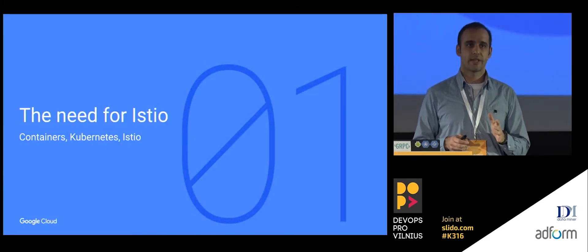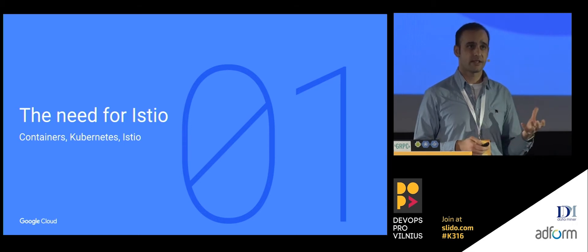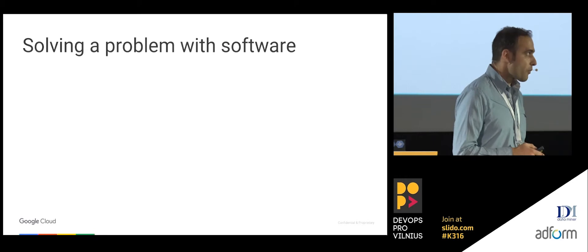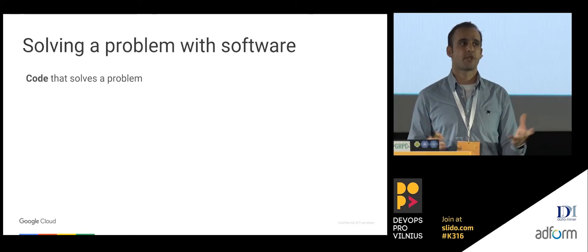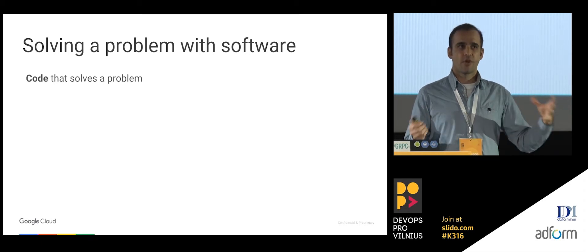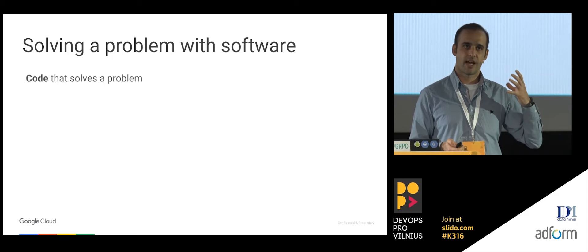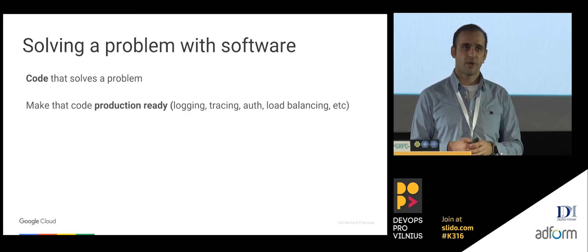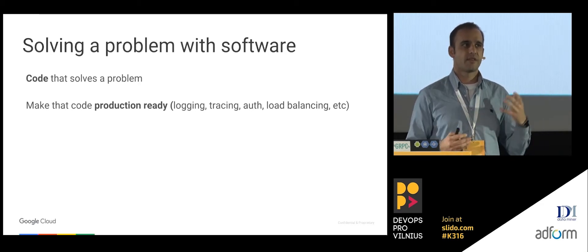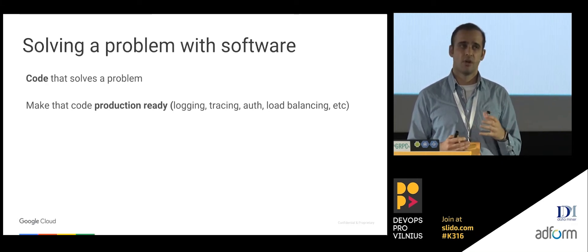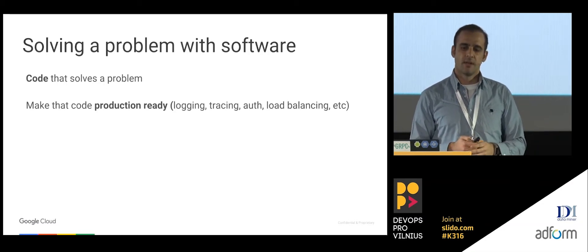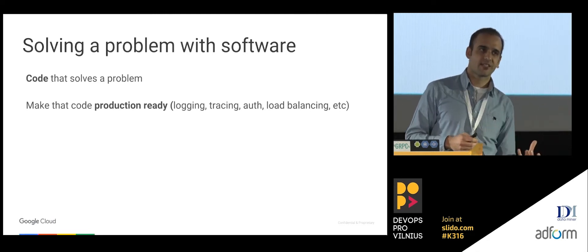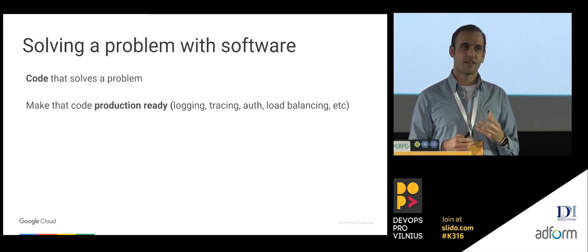So the need for Istio. When you think about solving a problem with software, the first thing you need is the actual code that solves the problem. But that's not the only thing. You need to make the code production-ready — can you trace it? Can you look at the logs? Can you change the load-balancing rules? All the things around the code that make it maintainable. Sometimes the time it takes to write the code is less than the time it takes to make it production-ready, so it's not trivial.